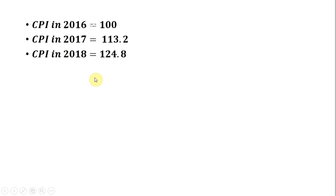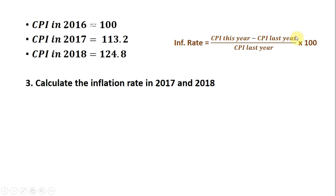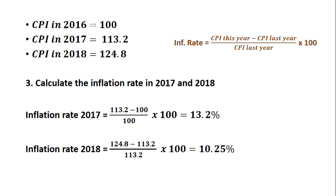Rewriting those CPIs for each year, it's now time to calculate the annual inflation rate for 2017 and 2018. Using the inflation rate formula: in 2017, the inflation rate is the CPI in 2017 minus the CPI in 2016, divided by the CPI in 2016. This gives us an inflation rate of 13.2% — on average, prices rose 13.2% in 2017. In 2018, taking the CPI in 2018 minus the CPI in 2017, divided by the CPI in 2017, we get an annual inflation rate of 10.25%.